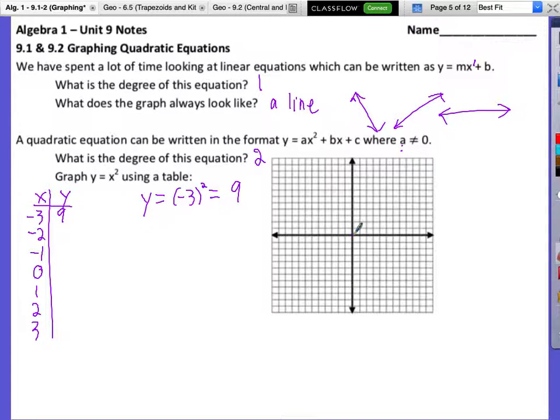So when x is negative three, y is nine. Now what can we do with that point, negative three comma nine? Can we graph it? Let's do that. So we'll go negative three which direction? Left. One, two, three. Which direction would we go nine? Up. Let's pause it. One, two, three, four, five, six, seven, eight, nine. Boom. Made it.